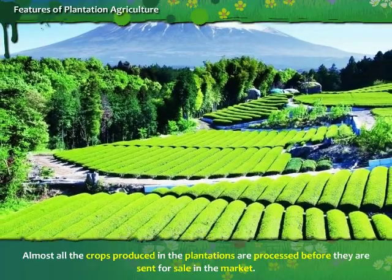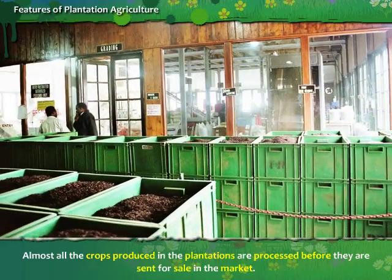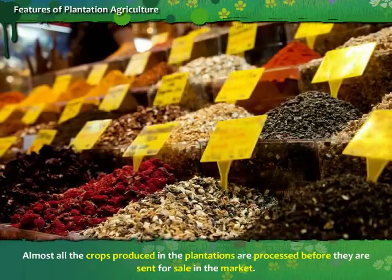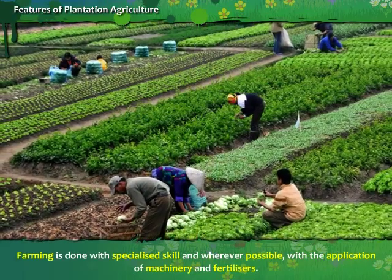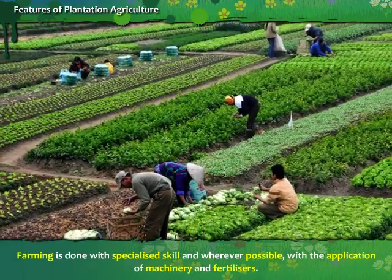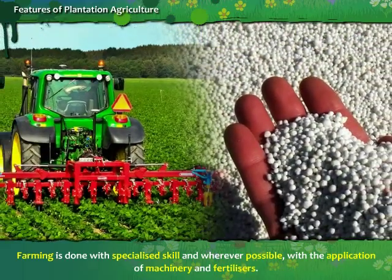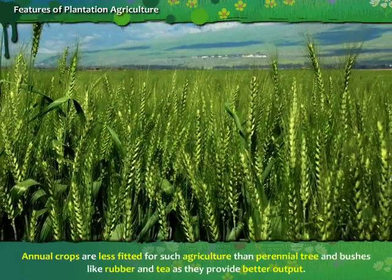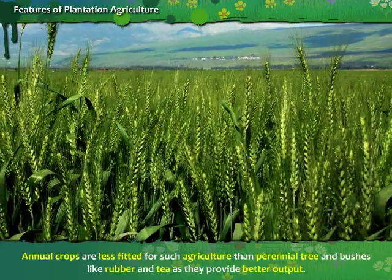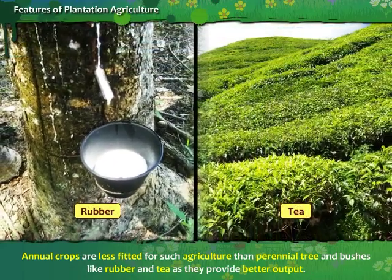Almost all the crops produced in the plantations are processed before they are sent for sale in the market. Farming is done with specialized skill and wherever possible with the application of machinery and fertilizers. Annual crops are less fitted for such agriculture than perennial trees and bushes, like rubber and tea, as they provide better output.